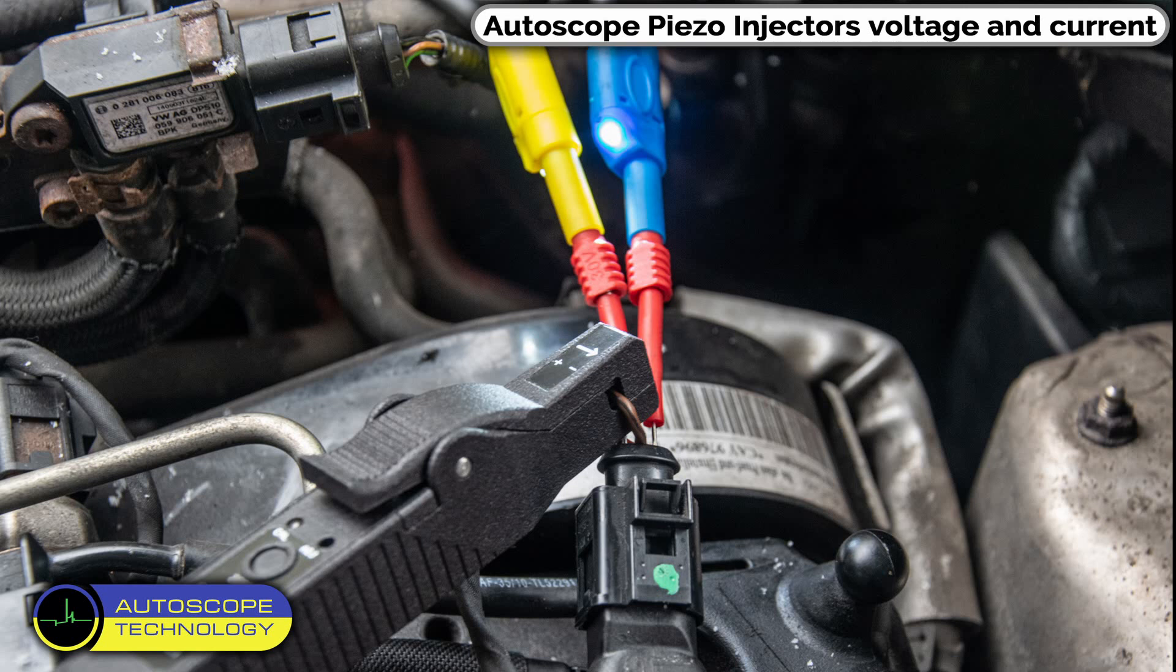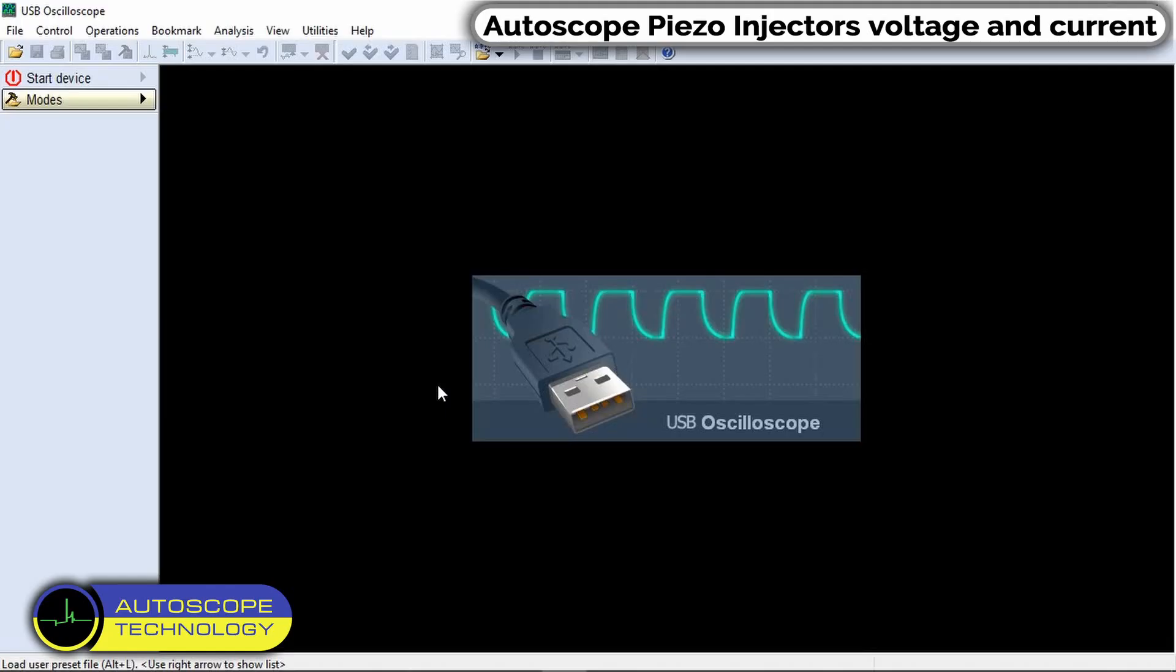To measure the voltage in the injector control circuit, we need two measuring probes, which we connect to the wires on the injector connector. Let's take a closer look at the signals of various injection systems.